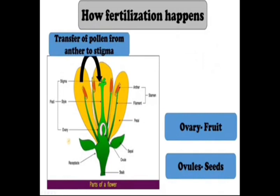How does fertilization happen? The anther produces pollen grains. The pollen grains are produced by the anther and are passed to the female reproductive part. The female part receives them at the stigma — the pollen grains will be stored inside the stigma.